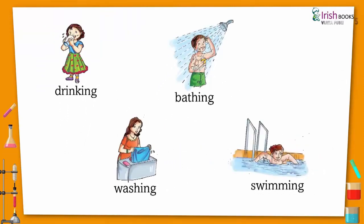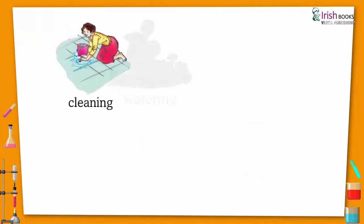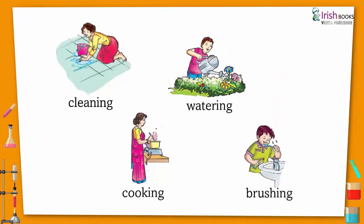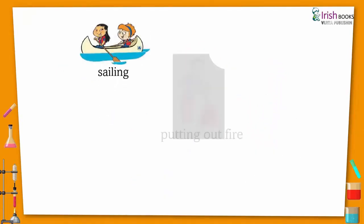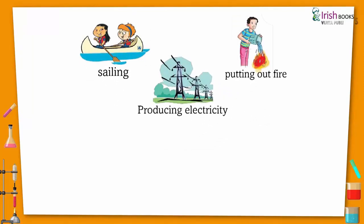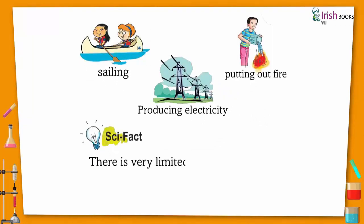Water is used in many ways: drinking, washing, swimming, cleaning, watering plants, cooking, brushing, sailing, putting out fire, and producing electricity. There is very limited drinking water on the Earth.